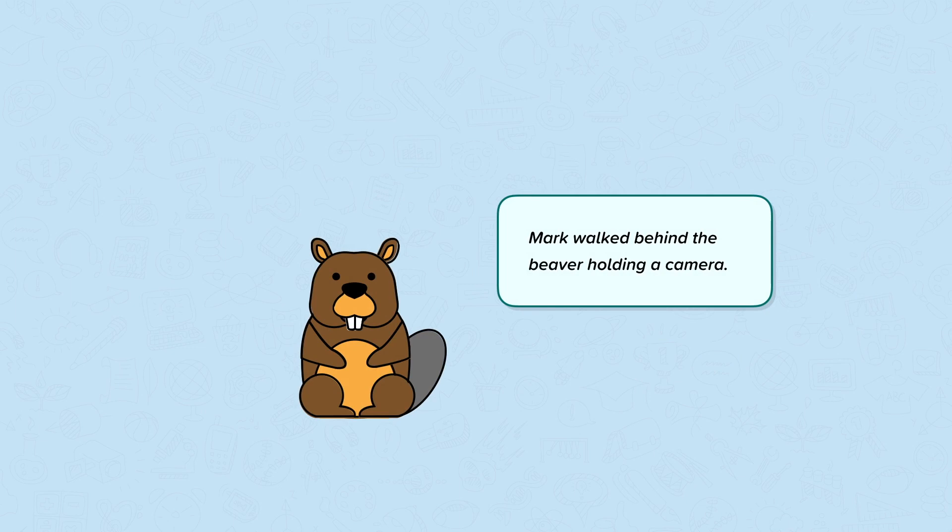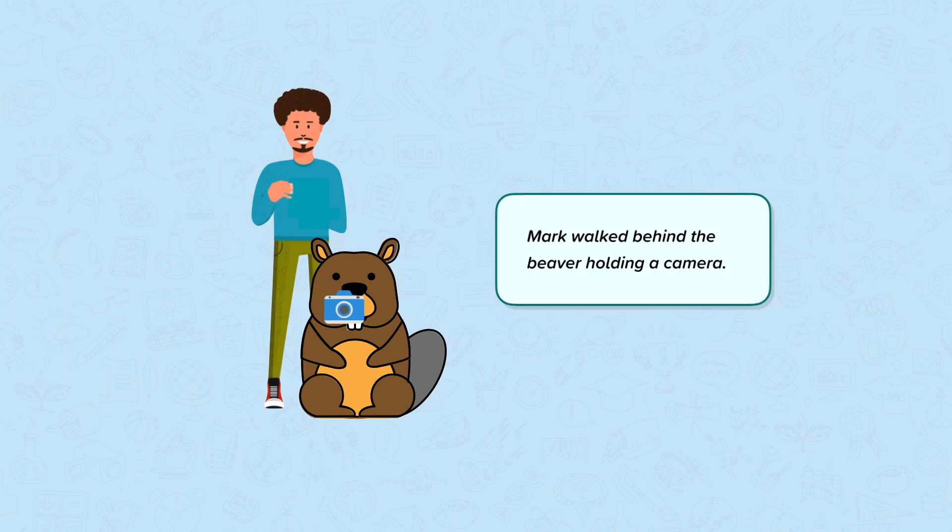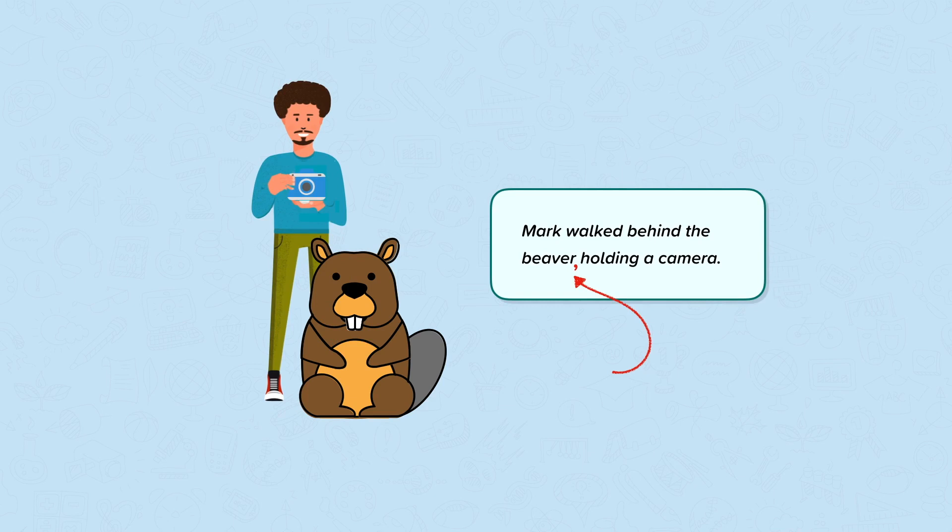Mark walked behind the beaver holding a camera. Without a comma, this sentence suggests that it is the beaver who is holding the camera. By placing a comma here and therefore adding a pause, this sentence has changed its meaning. Mark walks behind the beaver, holding a camera. The comma makes it clear that Mark is the one holding the camera.